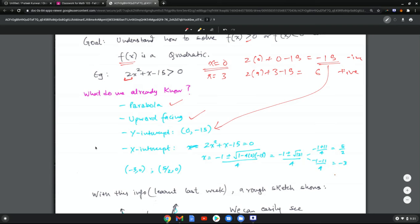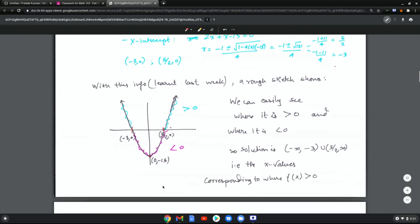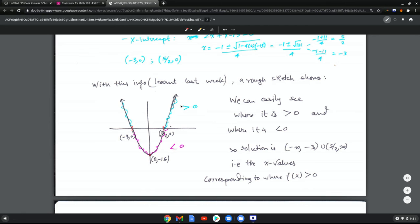Now with this info, which we learned in last week, most of them except the last one we just learned in the previous video, we can draw a rough sketch because we know this is where the y intercept is. We know where the x intercept is. It's going up and then it's immediately obvious by looking at the arms of the parabola that the blue region here is where it's positive and the purple region is where it's negative. So the solution for when it is positive is going to be the corresponding x values, which is negative infinity to negative 3 and 5 halves to infinity, not including the endpoints because at that point the quadratic is 0 and we are looking for strictly greater than 0.